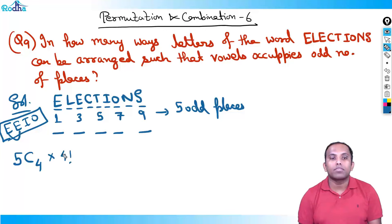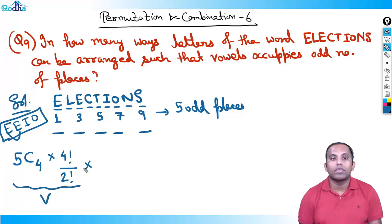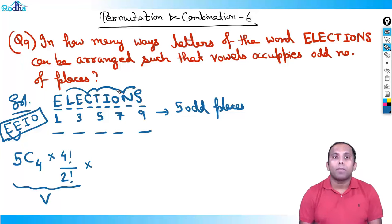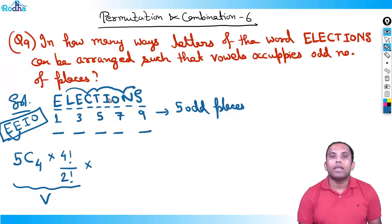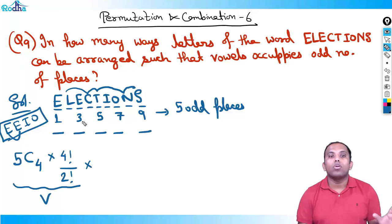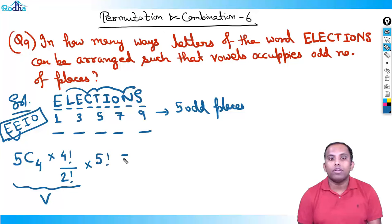The four vowels can be arranged on those four places in 4! ways, but since E repeats two times, we divide by 2!. Now for consonants: there are five consonants — L, C, T, N, and S — at five remaining places. Since one odd place is also left for a consonant, there are five total places for consonants, and they can be placed in 5! ways.